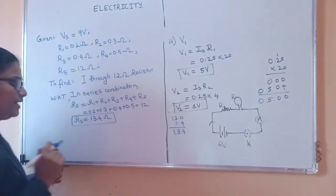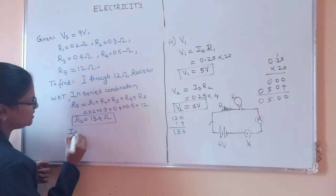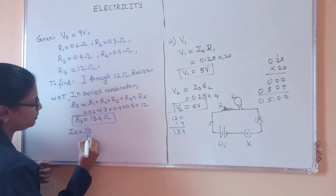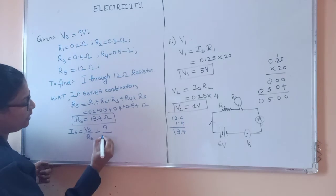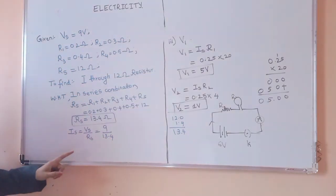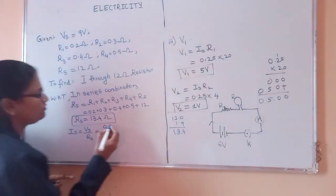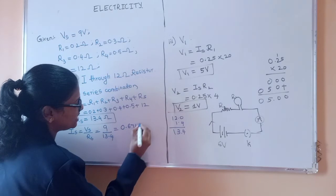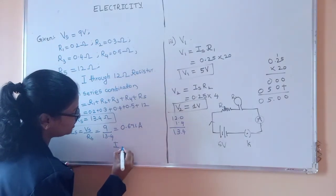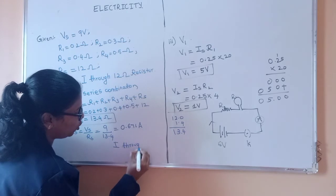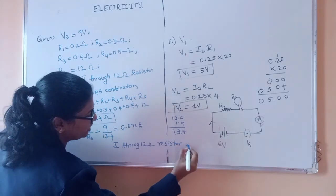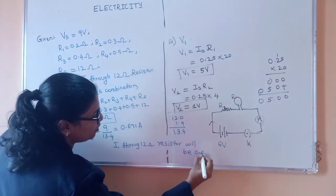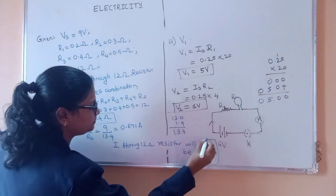So using this we can calculate current. We know that Is is equal to Vs divided by Rs. Vs is always given, that is 9 by 13.4. So when we solve for this we will get it around 0.671 ampere. So current through 12 ohm resistor will be 0.671 ampere.